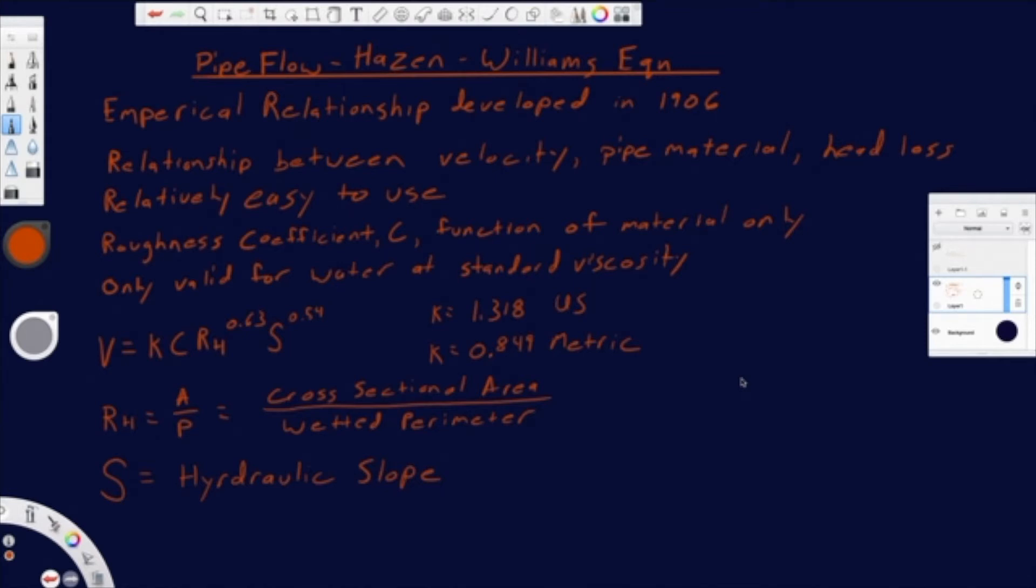And the Hazen-Williams equation specifically was developed in 1906 by Alan Hazen and Gardner-Stewart-Williams. It basically relates those three variables: velocity, pipe material, which is basically the roughness of the material, and the head loss that results from that.